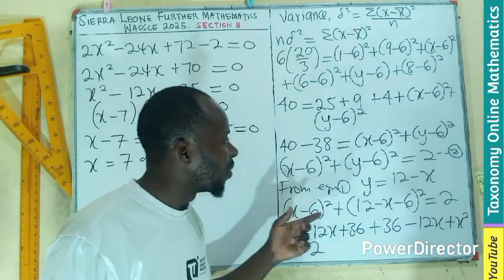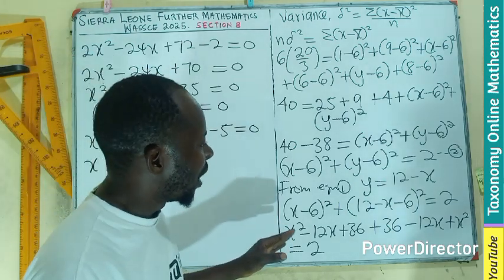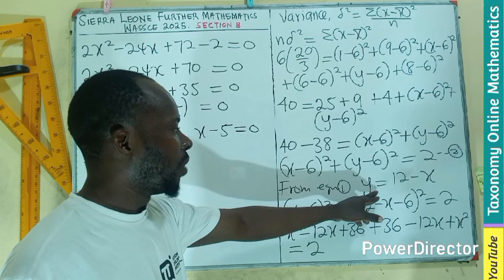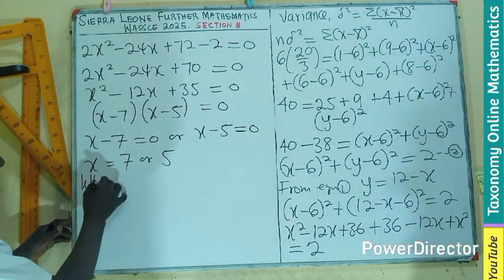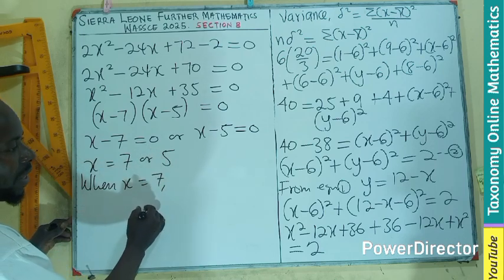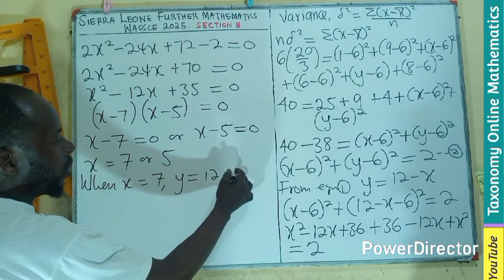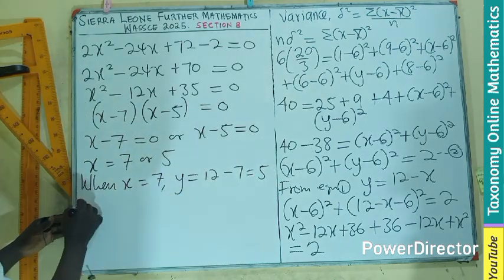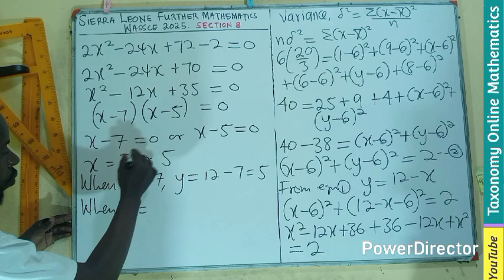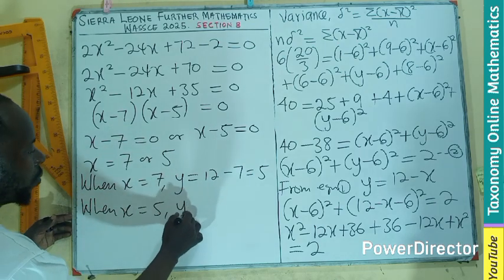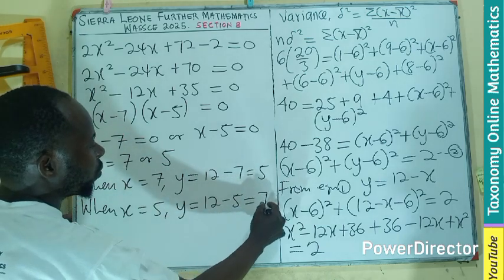So, the value of x is 7 or 5. But, remember, you are looking for both x and y. So, we have gotten x. So, we can find y from here. So, when x equals to 7, your y will become 12 minus 7, which gives us 5. And when x equals to 5, y will also be 12 minus 5 equals 7.